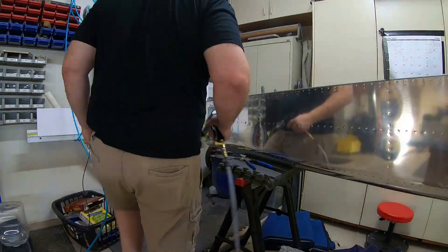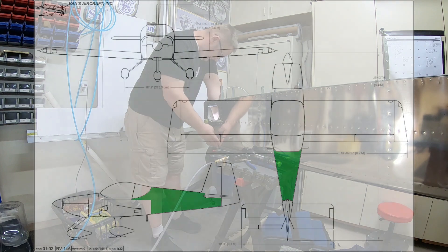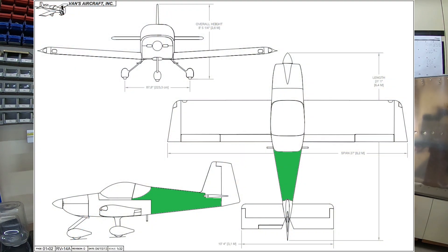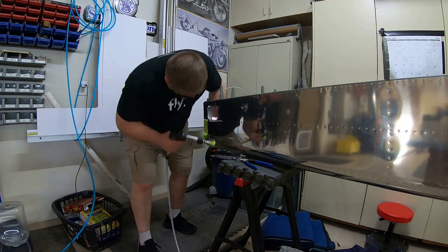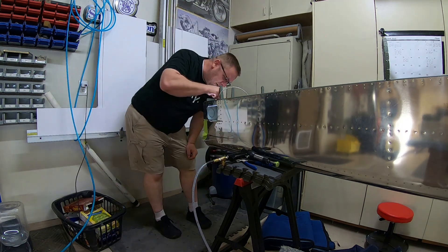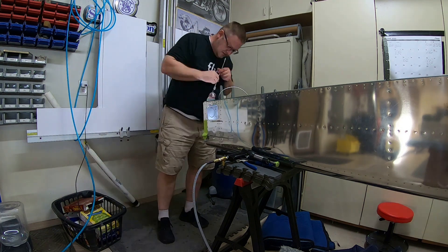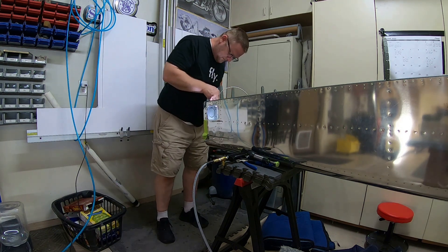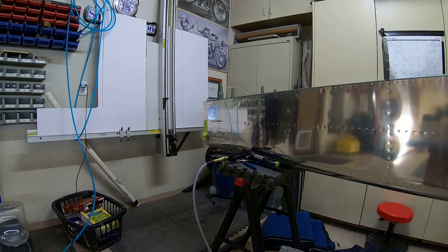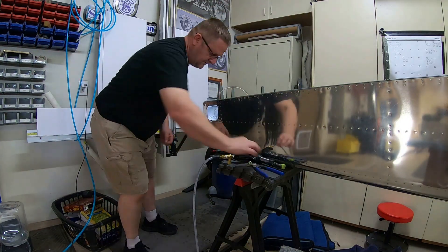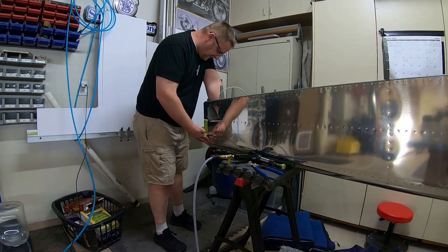Howdy everybody, welcome back to video number eight of the aft fuselage. In this video you'll see a couple of different things. First of all, I finish up the last few rivets in the very aft section of the aft fuselage. It's not a very good camera angle, but there's not a whole lot of room there.